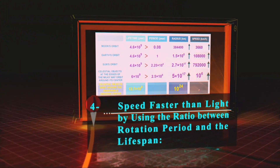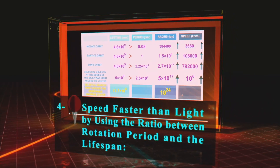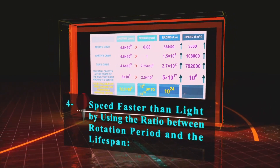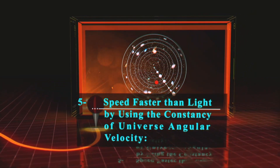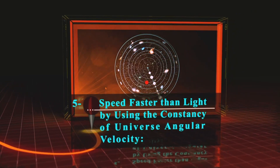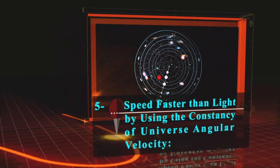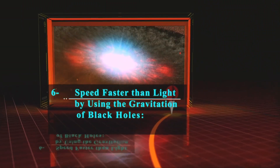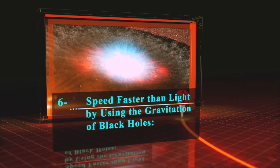4. Speed Faster Than Light by using the Ratio between Rotation Period and the Lifespan. 5. Speed Faster Than Light by using the Constancy of Universe Angular Velocity. 6. Speed Faster Than Light by using the Gravitation of Black Holes.